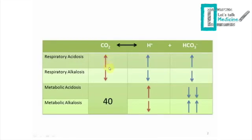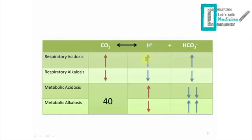In respiratory acidosis, the arrows in red represent the cause. We're going to have an increase in CO2 in our body — that's the cause. Since CO2 increases, the equation is going to move to the right, resulting in an increase in hydrogen ions and an increase in bicarbonate. However, the bicarbonate increase is not that significant in respiratory pathologies — remember that.